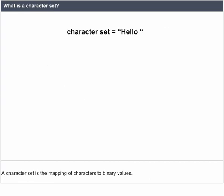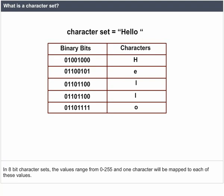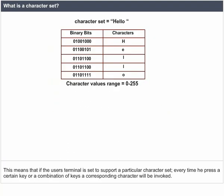What is a character set? A character set is the mapping of characters to binary values. In 8-bit character sets, the values range from 0 to 255, and one character will be mapped to each of these values. This means that if the user's terminal is set to support a particular character set, every time he presses a certain key or a combination of keys, a corresponding character will be invoked.